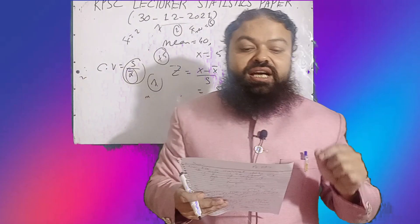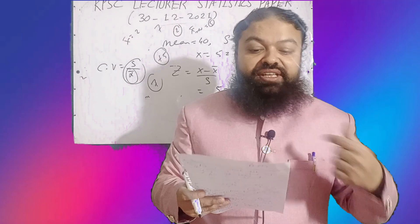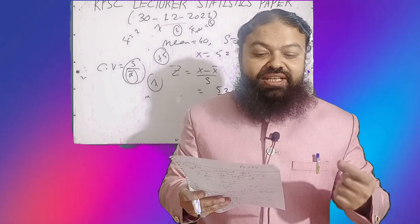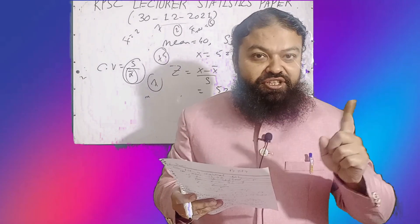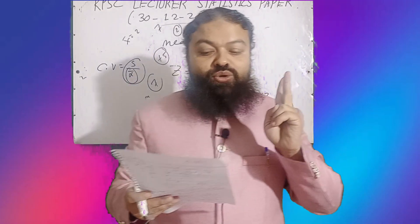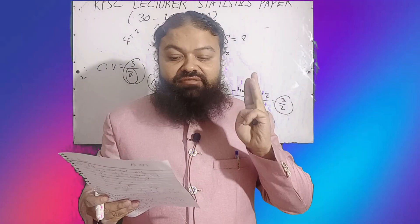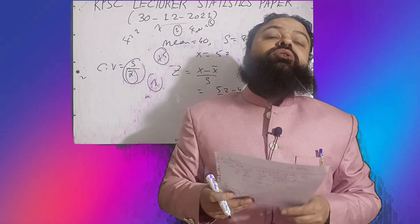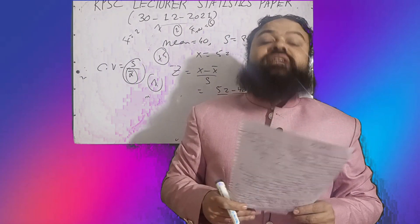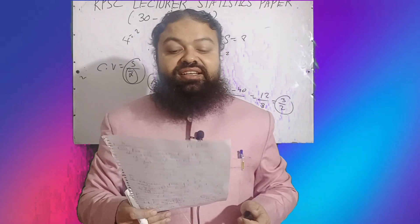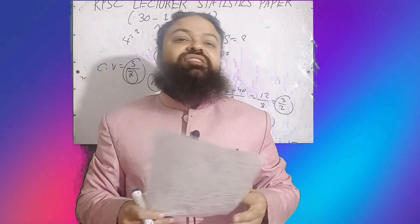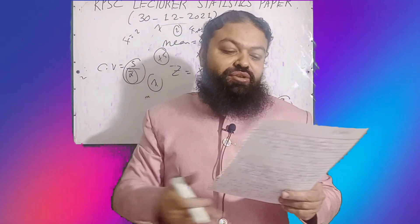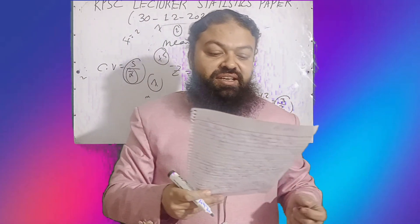To measure how much the cost of some variable changes over time, options were: a) inflation index — incorrect, b) quantity index — incorrect, c) value index — incorrect. The correct answer was d) none of these. The chi-square distribution is always positively (right) skewed — that is the correct option.